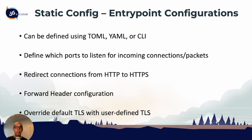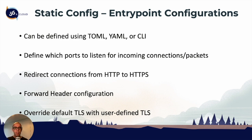We can redirect connections from HTTP to HTTPS. We can also add forwarded header configuration — if we want to pass header information to the back end, we can configure that as a global setting or later per service if required. Finally, we can override the default TLS, which allows us to put certificates into the entry point. That means we can say domain example.com has this certificate, so any service that uses example.com will automatically get the certificate assigned to it.